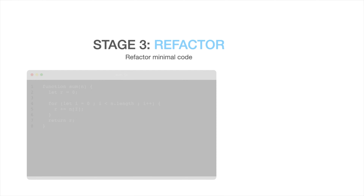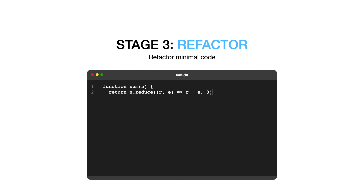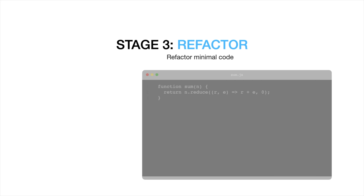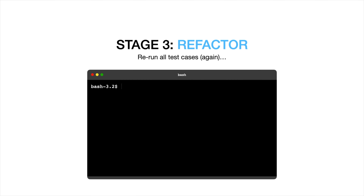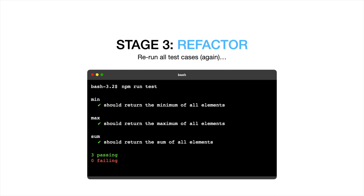And finally, if needed, we refactor the code we just wrote without forgetting to rerun all the test cases one last time to certify that nothing was broken in the process. As we've seen, the implementation of this pattern is fairly easy and straightforward, but there are still a few things to keep in mind when it comes to writing tests.